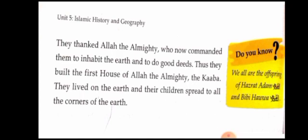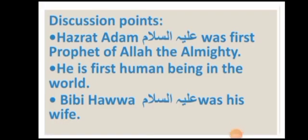My dear students, we have done the reading twice. Let's do the discussion about the main points we have read in the topic. In this topic we have read that Hazrat Adam alayhislam was the first prophet of Allah the Almighty. Hazrat Adam alayhislam was the first prophet and the Holy Prophet Hazrat Muhammad, peace be upon him, Khatam-ul-Nabiyeen, is the last prophet of Allah the Almighty. Allah has sent 124,000 prophets in this world. Bibi Hawa alayhislam was the wife of Hazrat Adam alayhislam and she was the first woman in the world.